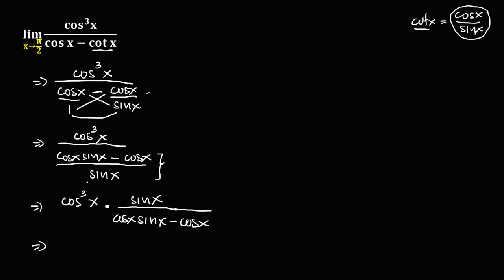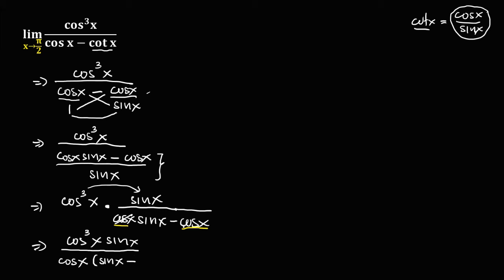Simplify by multiplying the two parts. We get cosine to the power 3x times sine x in the numerator. In the denominator, we can factor out cosine x, giving us cosine x times the quantity sine x minus 1. Then we cancel this cosine x from numerator and denominator, reducing the power by one.